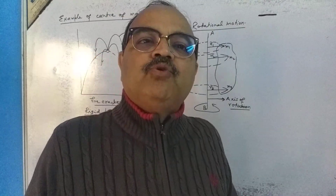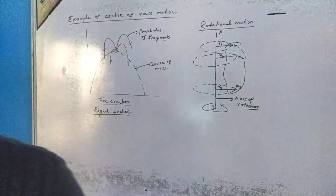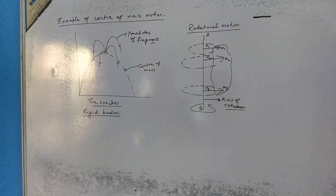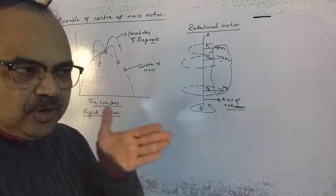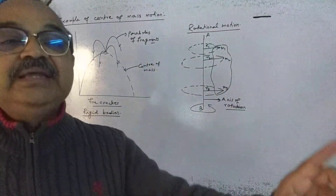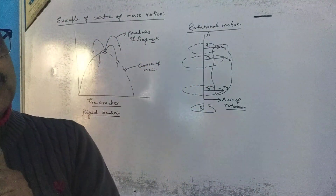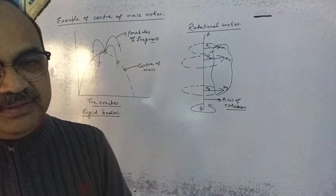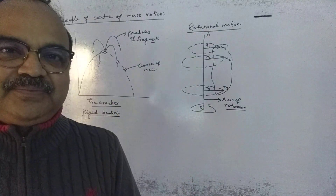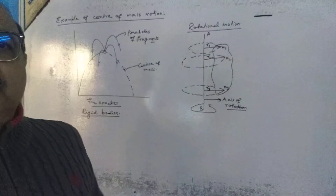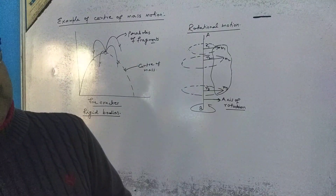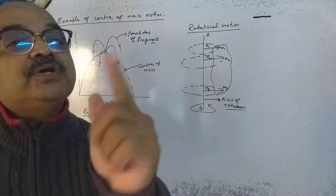There is a difference between rotational motion and translatory motion. In translatory motion, the body moves straight — we have linear velocity, linear displacement, and linear acceleration. But in rotational motion, every particle makes a circular path, and we have angular displacement, angular velocity, and angular acceleration.